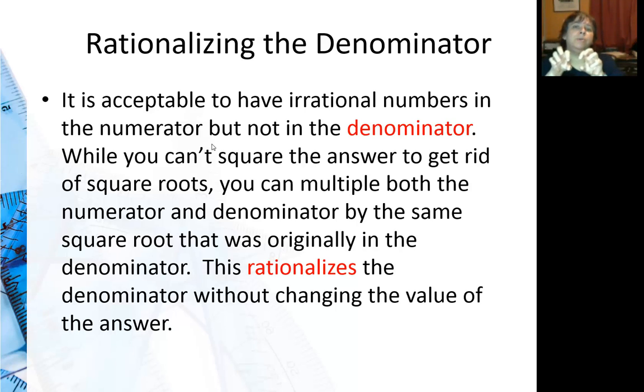The way we fix it is if I have a square root of two in the denominator, I want to multiply it by a square root of two. Because what's square root of two times square root of two? That's square root of four, which is two. I got to get rid of the square root.